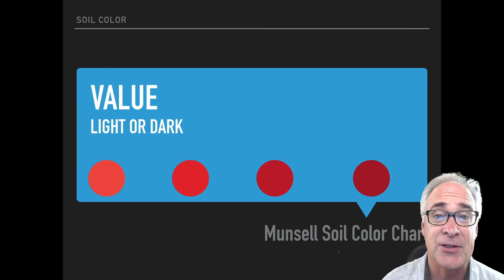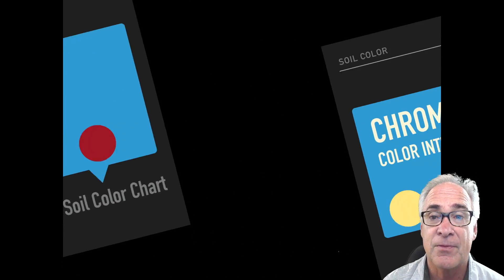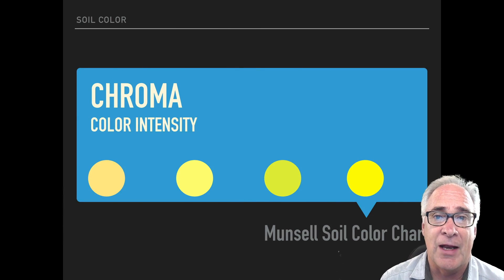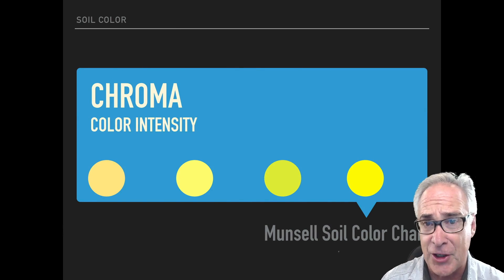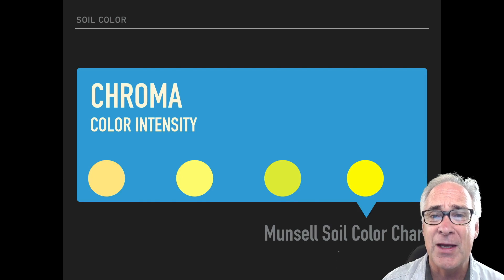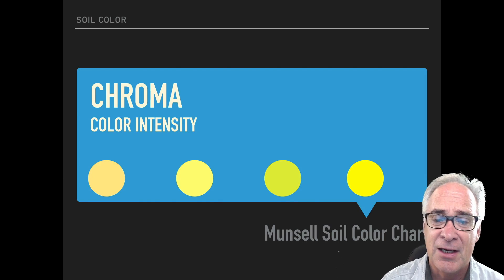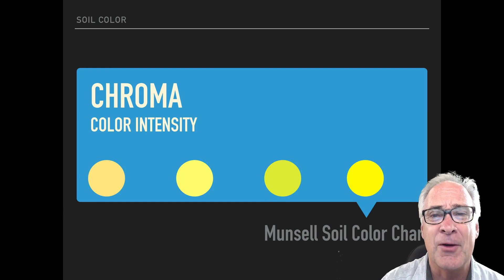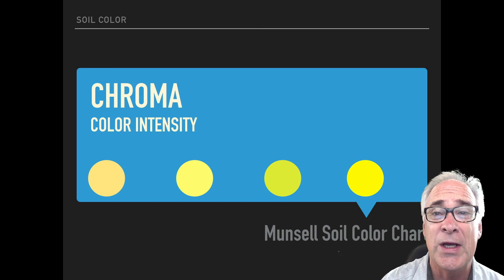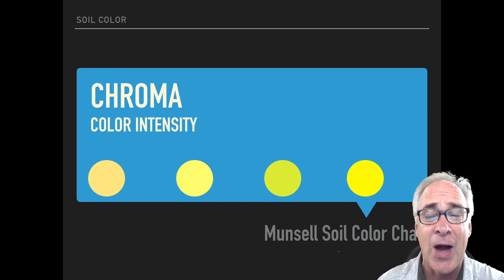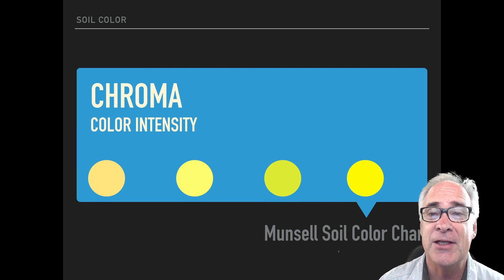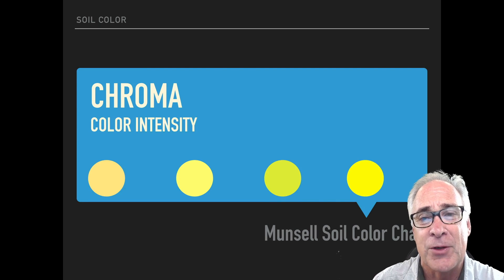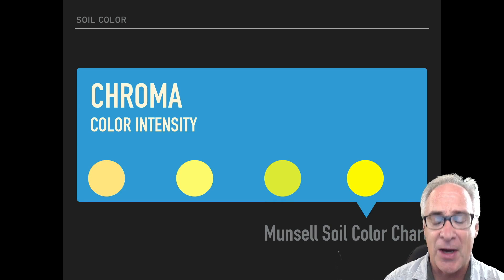So value has to do with how light or how dark it is. Now, chroma is the color intensity. On this chart, this one is kind of pale — it's not very strong, or it's considered weak in yellow. As we move to the right, you can see it's much more strong in its color. The intensity — the pigments within it are packed a little bit more tightly in that small space. So chroma is about intensity.